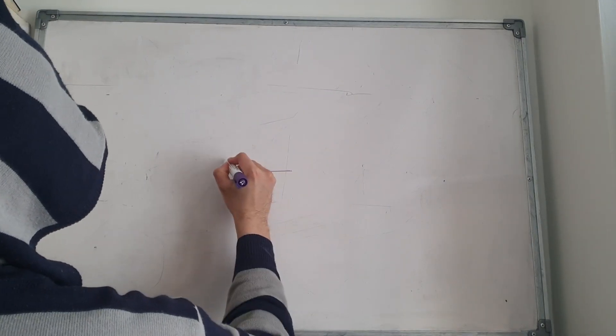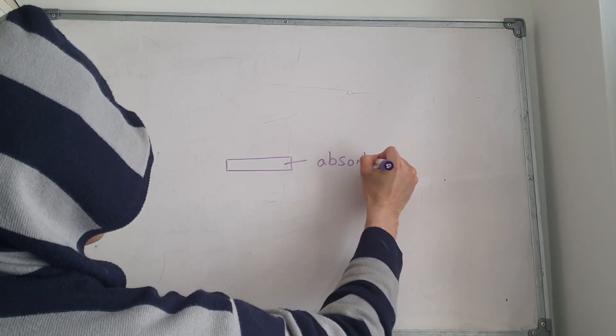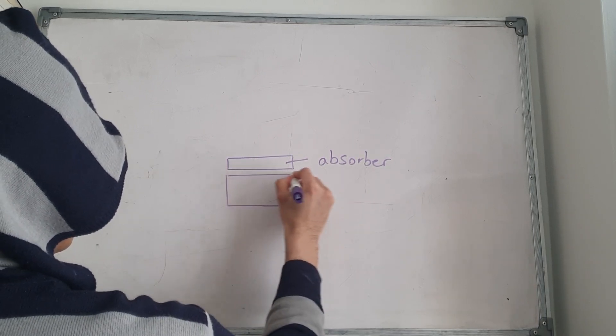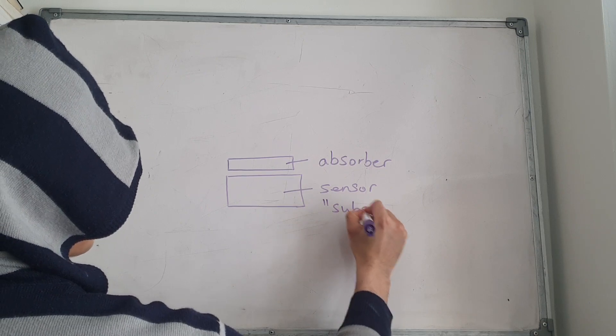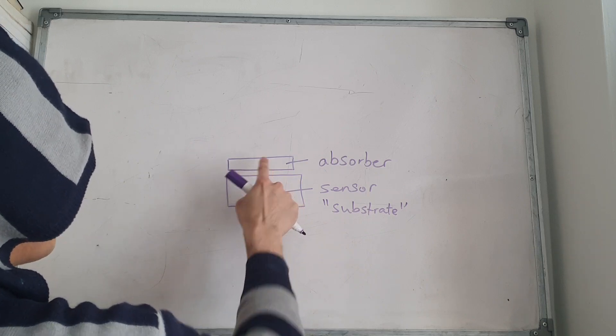A bolometer is a detector for radiation and particles, usually in the infrared spectrum or millimeter range. Let's draw a diagram: here is the absorber, and here is the sensor — which is a substrate of some kind. The substrate is connected to the absorber.